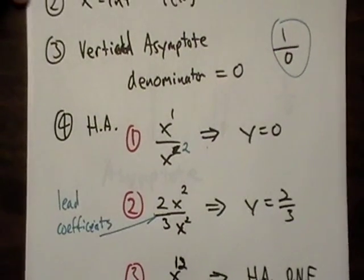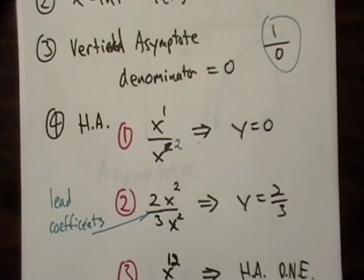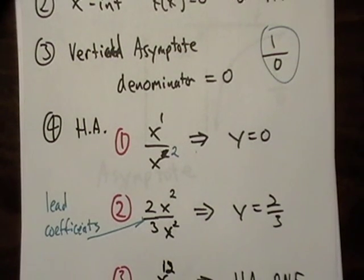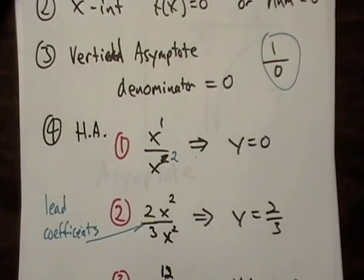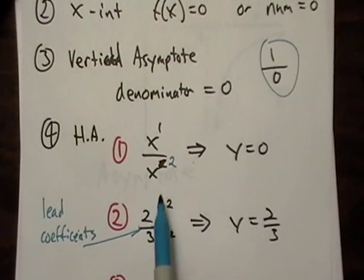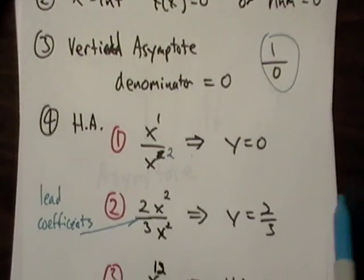If the degree is the same, you use the lead coefficients of the polynomial. That's your largest degree term on each one of those. That's the one we're going to use. In this case, it's two-thirds. So, the actual asymptote would be y equals two-thirds.